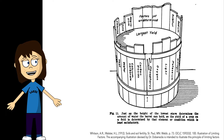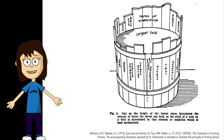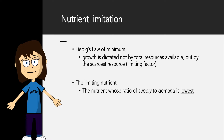In this barrel, the staves are represented by different nutrients and other properties, such as potassium, light availability, oxygen, phosphorus, carbon dioxide, calcium, water, heat, etc. And in this case, the lowest stave is phosphorus. So in this representation, the barrel couldn't hold more water unless you added more phosphorus. This obviously doesn't make sense for a barrel, but it does make sense when we're thinking about a field or a lake — there's always going to be something limiting growth.